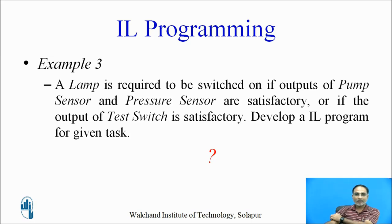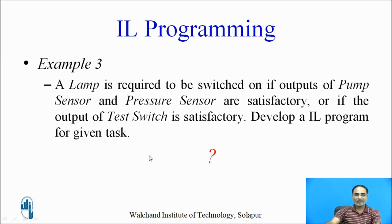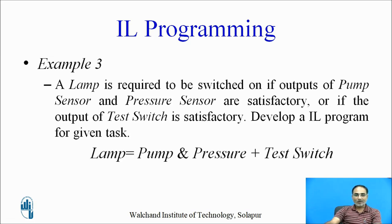Let us solve one more example. A lamp is required to be switched ON if the outputs of a pump sensor and pressure sensor are both satisfactory, or if the output of a test switch is satisfactory. We can express this as: Lamp = Pump AND Pressure OR Test Switch — converting the problem into a Boolean expression with ANDing and ORing operations.